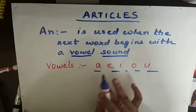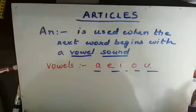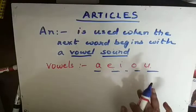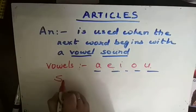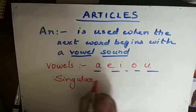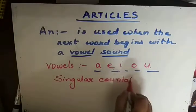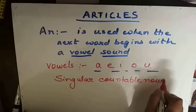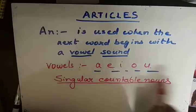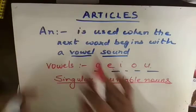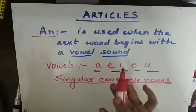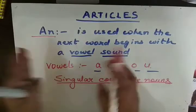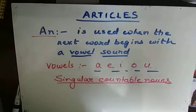You have to remember the sound, not just the letter. If a word starts with a vowel letter but does not produce a vowel sound, we will not use AN there. Keep this in mind carefully. And another rule for AN: AN is also used before singular countable nouns — things we can count and that are singular. So A and AN are like twin brothers. We just need to remember: AN for vowel sound, and A for consonant sound.